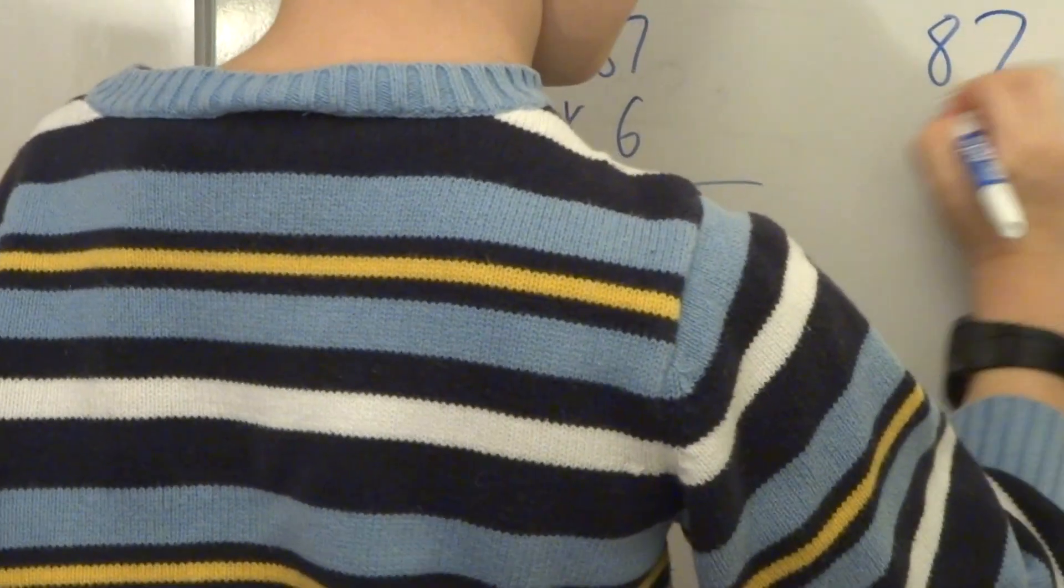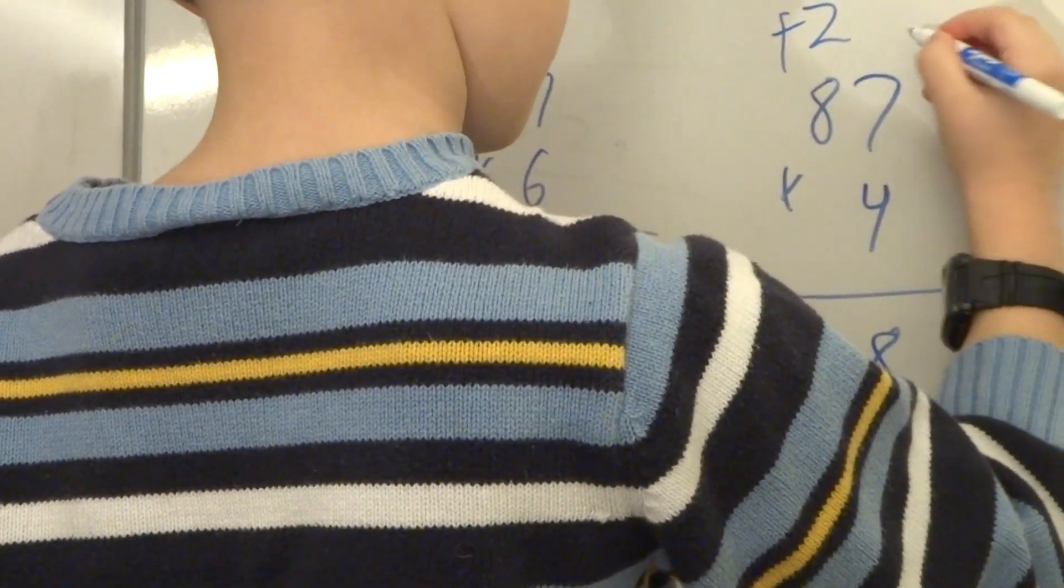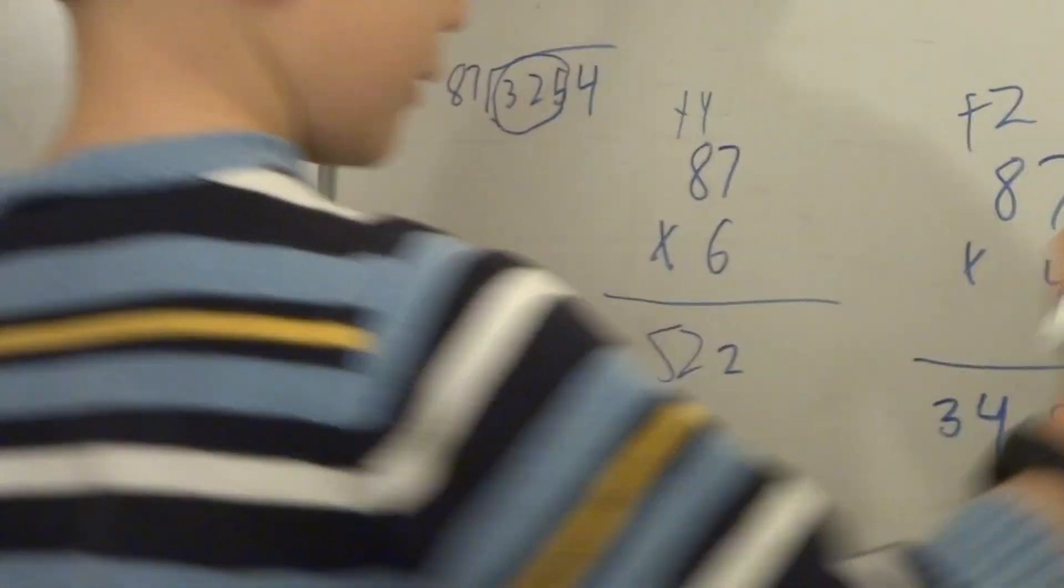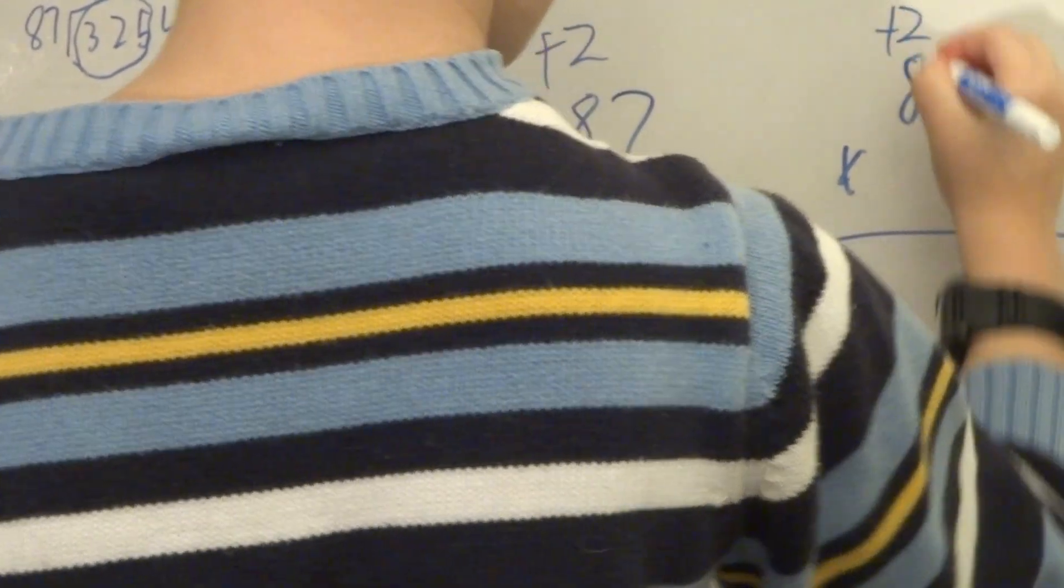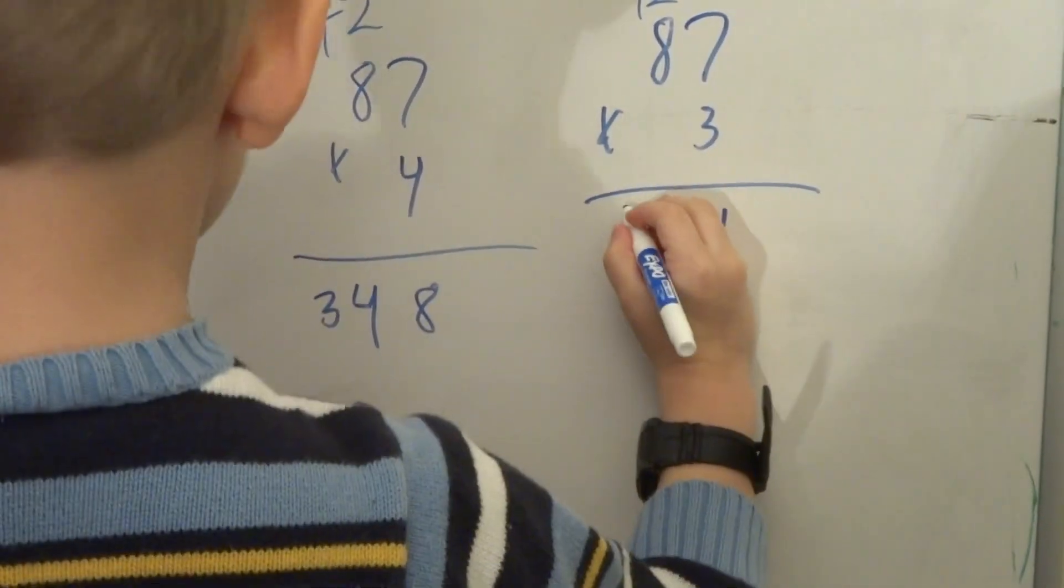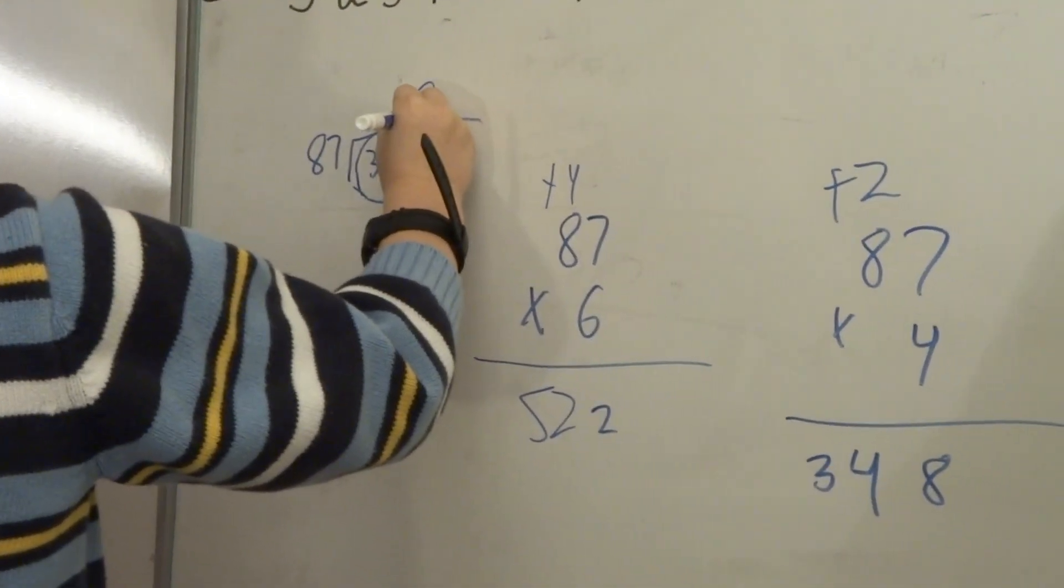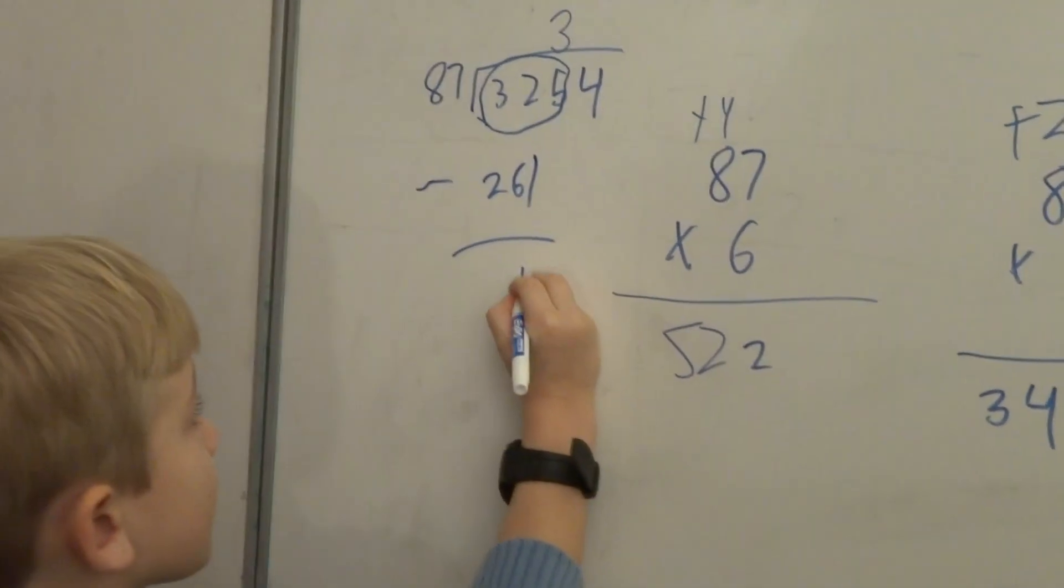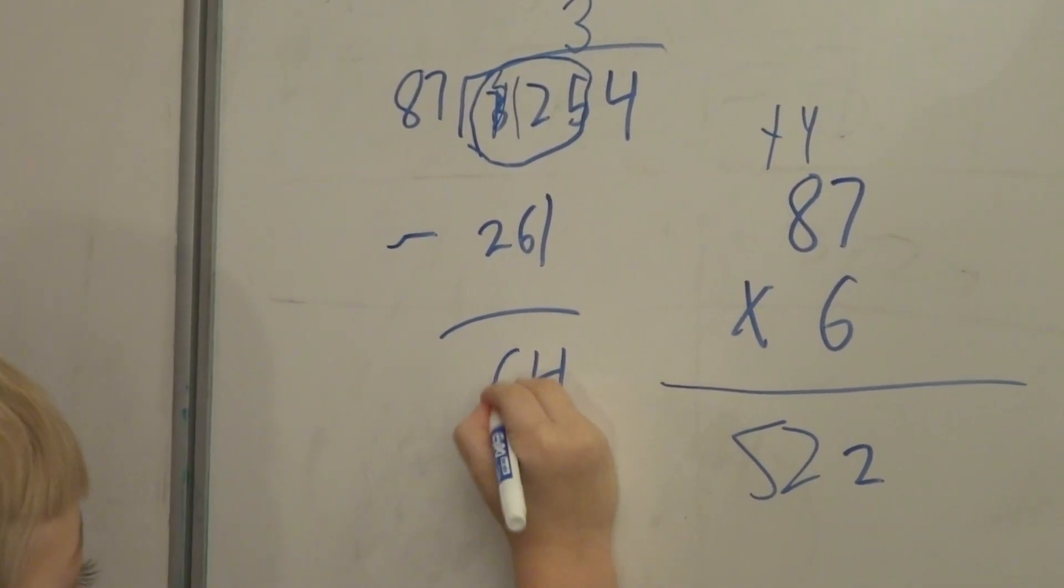I can make it smaller. So it has to be eighty-seven. Three times it equals twenty-four plus two equals twenty-six, and so it's thirty. Good. Minus two sixty-one equals four.